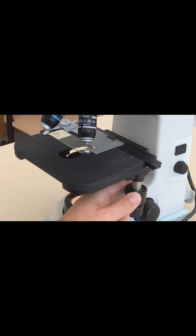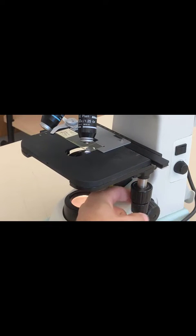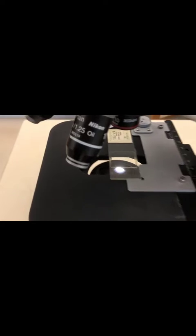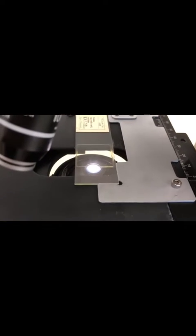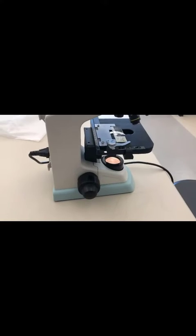You're going to use these two dials. You turn the top dial. Notice how the slide's moving towards you, away from you. And the bottom dial's left and right. You want the specimen to be right in the light's path. Otherwise, you're not going to see it when you try to focus the microscope.